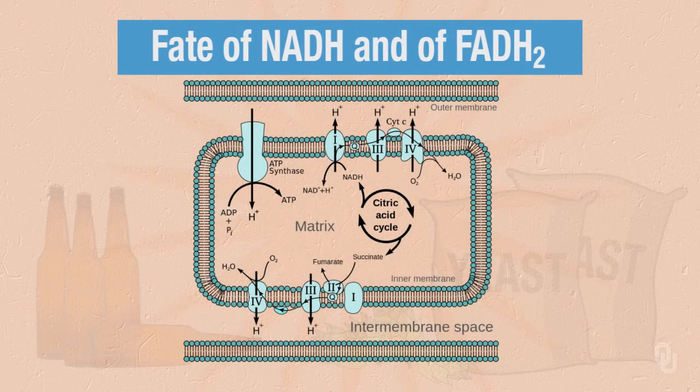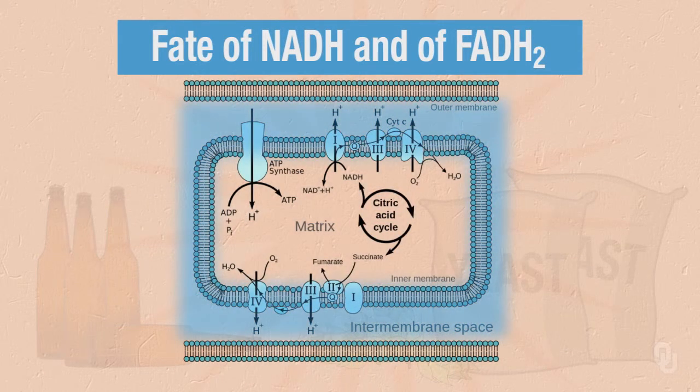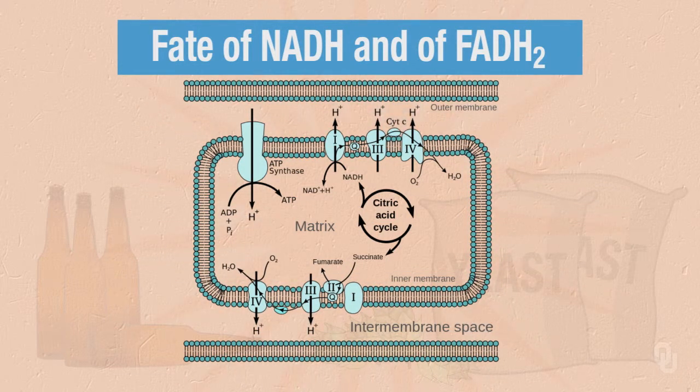As the electrons move through complex 1, they're transferred to Q, which I mentioned earlier. This is ubiquinone. It's basically an electron carrier that moves within the bilayer of the inner mitochondrial membrane. The electrons move from reduced Q through complex 3, where more protons are translocated from the matrix to the inter-membrane space. Then the electrons go one at a time to cytochrome C. We actually need two cytochrome Cs to accomplish this. The electrons pass from cytochrome C to complex 4, where more protons are then pumped out from the matrix to the inter-membrane space.